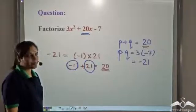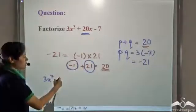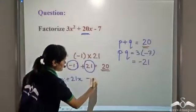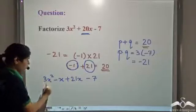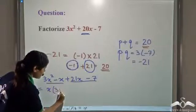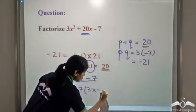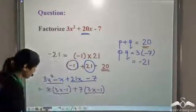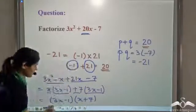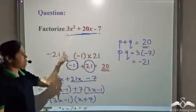We split the middle term using these two numbers: 3x² + 20x − 7 becomes 3x² − x + 21x − 7. Grouping the first two terms, x is common: x(3x − 1). For the last two terms, 7 is common: 7(3x − 1). Since (3x − 1) is the common factor, we write (3x − 1)(x + 7). This is the factorized form — you can multiply it out to verify.